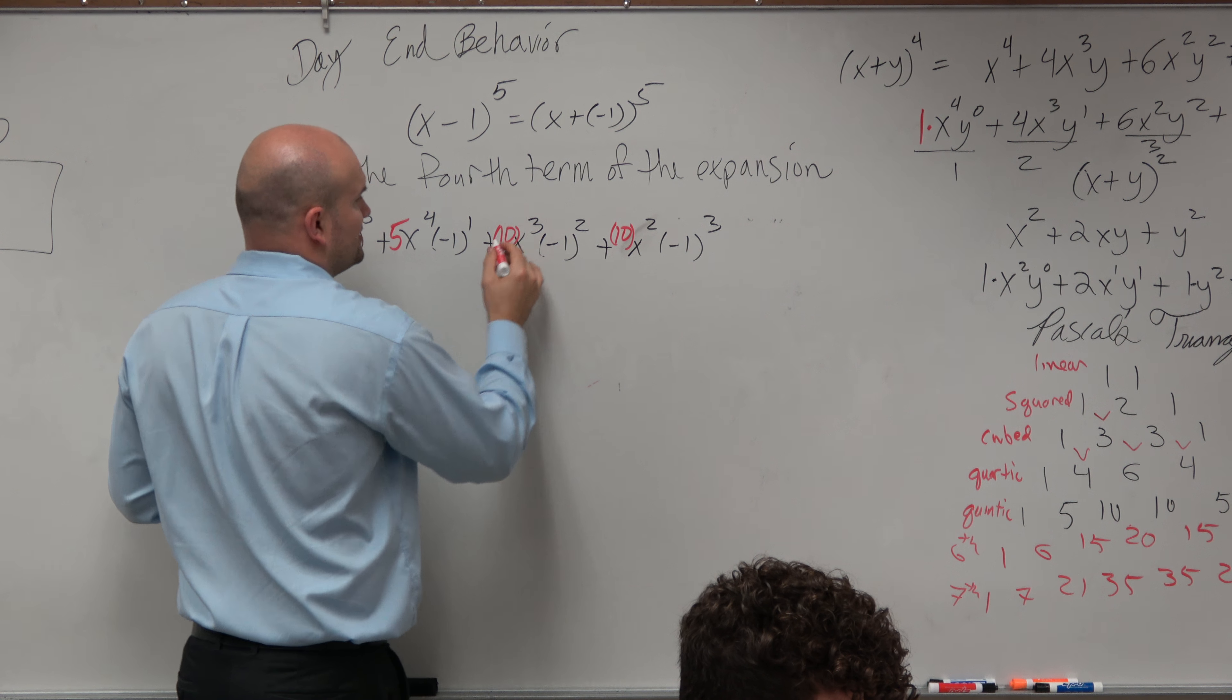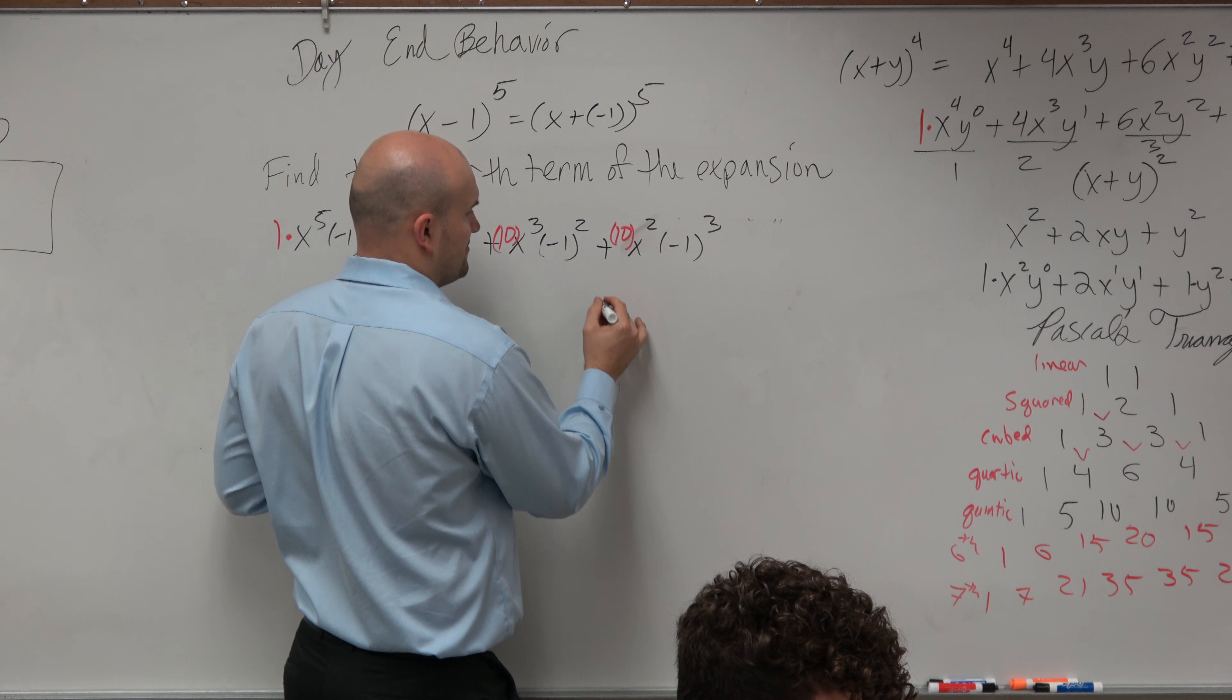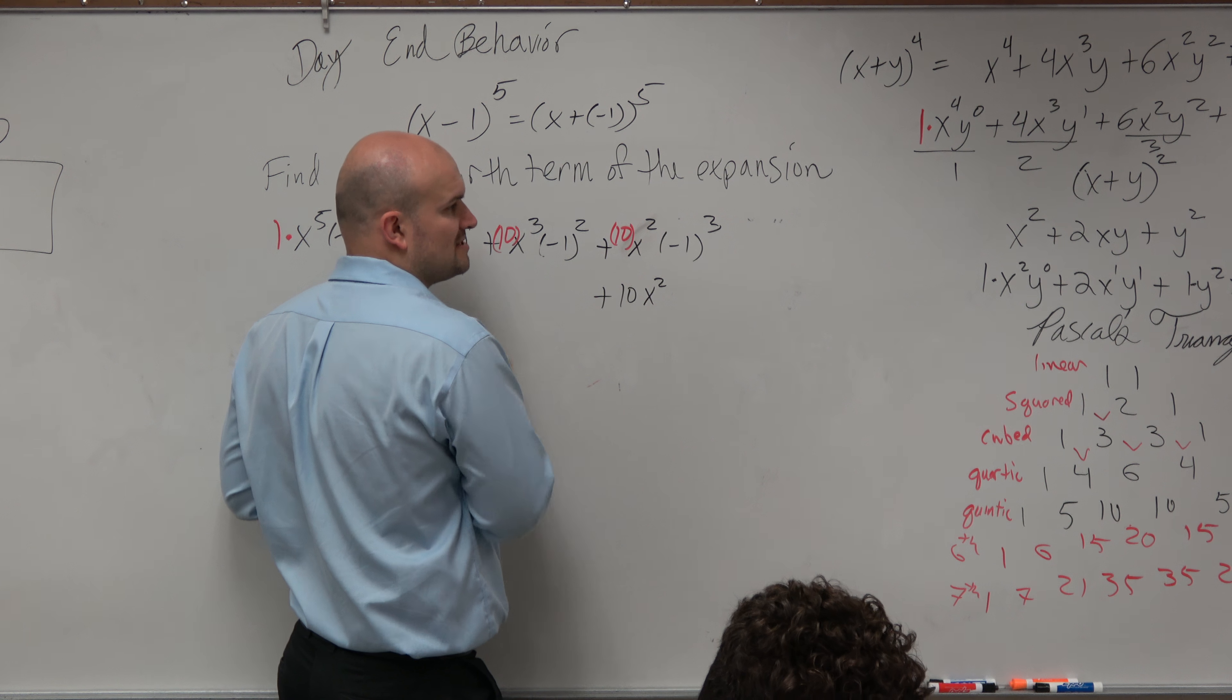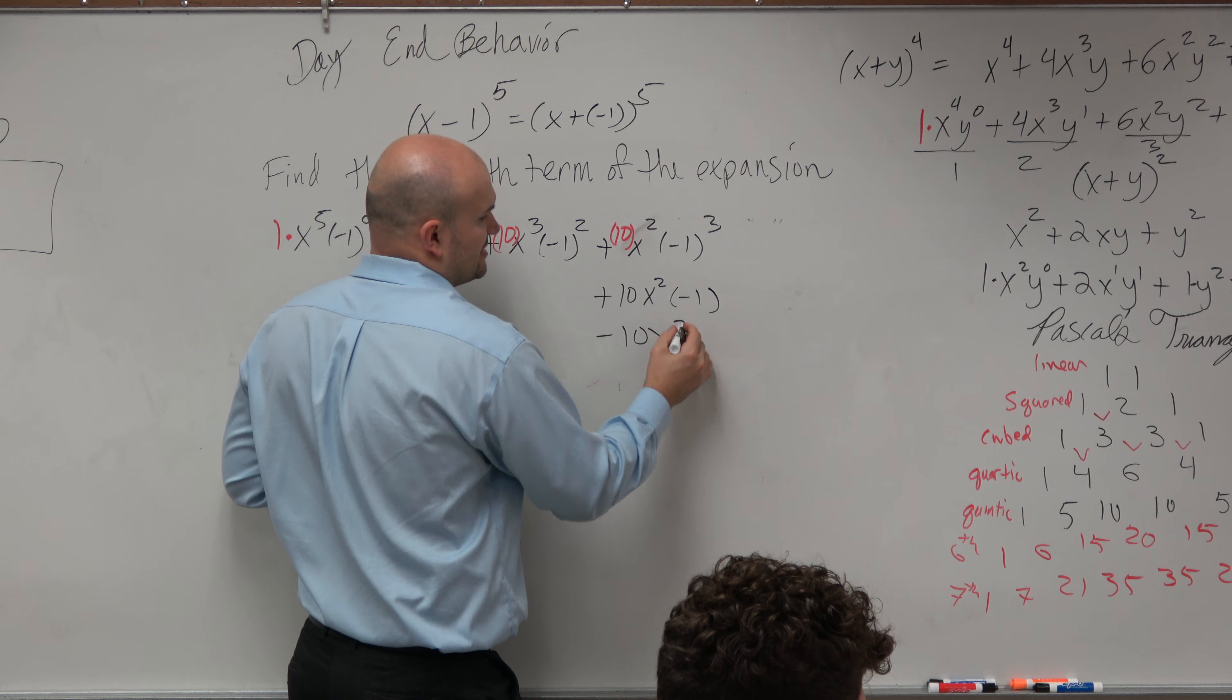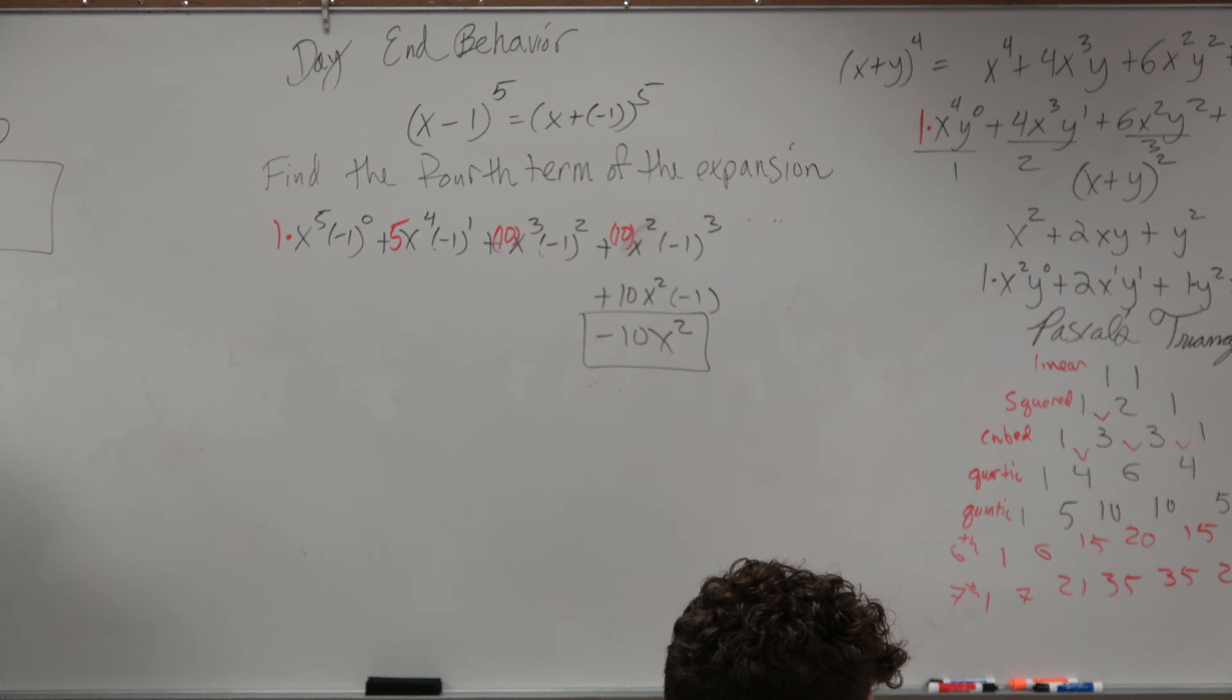Right? You're multiplying each of those by 10, by 5. So therefore, this becomes plus, so it's 10x squared negative 1 times negative 1 times negative 1 is negative 1. So it's a minus 10x squared.